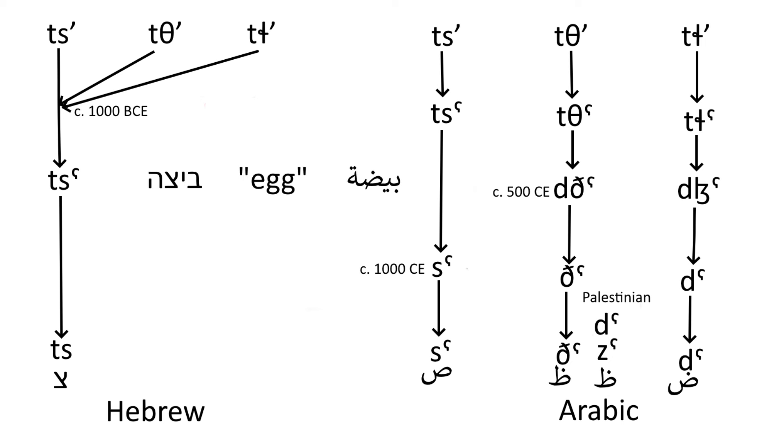So compare Palestinian Arabic baiḍ with Hebrew beitsa, egg, and Palestinian Arabic ẓord with Hebrew tzoraim, noon.